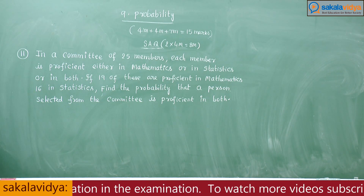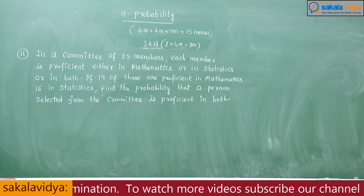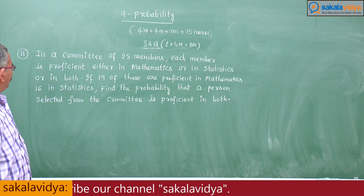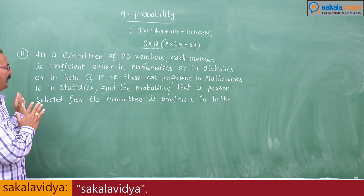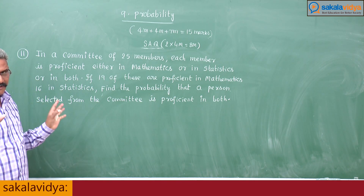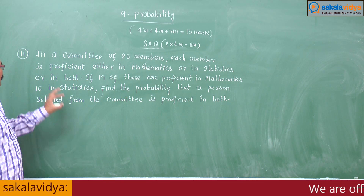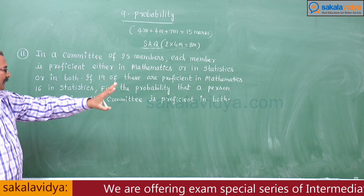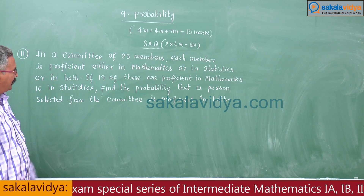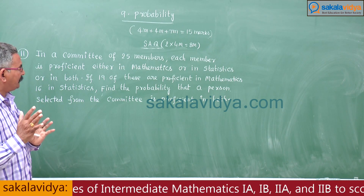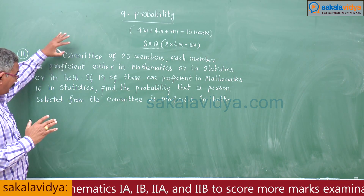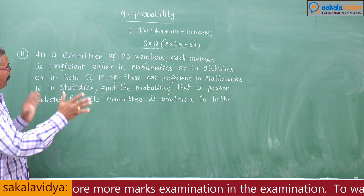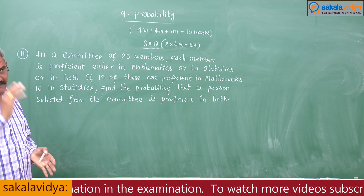It is a very important problem. In a committee of 25 members, each member is proficient either in mathematics or in statistics, or in both. 19 are proficient in mathematics, whereas 16 are in statistics. We have to find the probability that a person selected from that committee is proficient in both — both meaning mathematics as well as statistics.